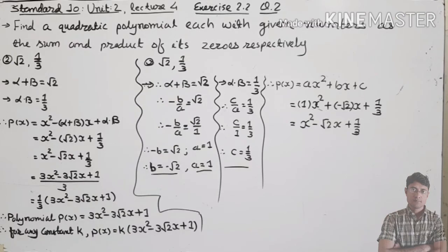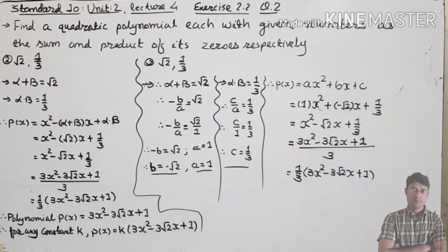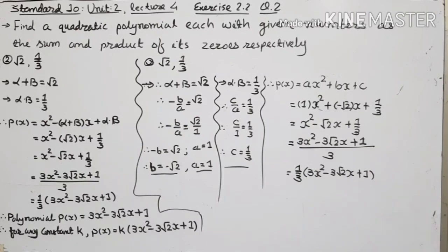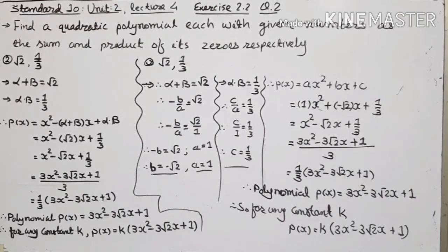Replacing a, b, c values into the quadratic polynomial formula ax squared plus bx plus c, we get x squared minus root 2 x plus 1/3. Taking LCM of 3 for simplification, we write 1/3 in bracket (3x squared minus 3 root 2 x plus 1). The actual polynomial p(x) equals 3x squared minus 3 root 2 x plus 1, and for any constant k, p(x) equals k in bracket (3x squared minus 3 root 2 x plus 1).